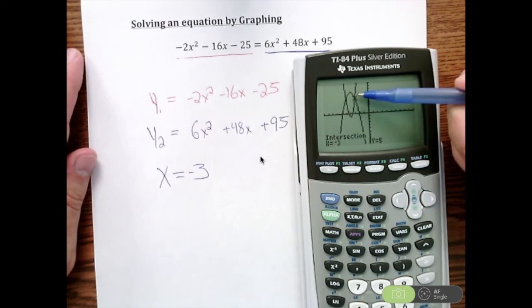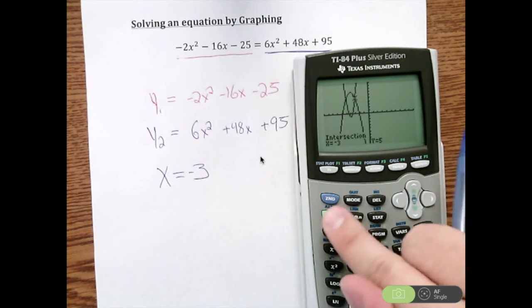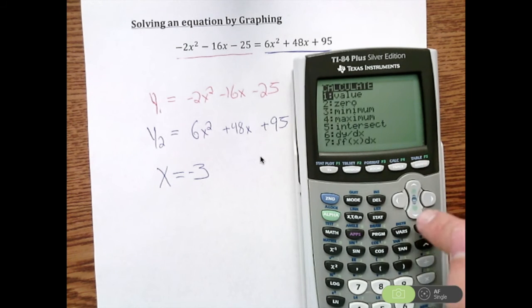But the thing is, there are two intersection points there. So I have to find the other one. So I'm going to repeat that process of going through and calculating the other intersection. So I do 2nd calc, option number 5 for intersect.